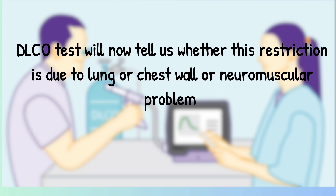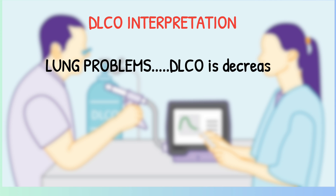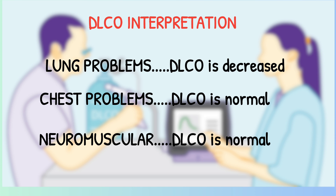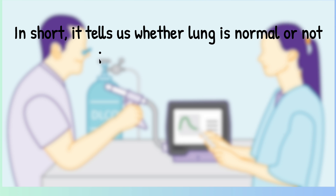The DLCO test tells us whether the restriction on spirometry is due to a lung problem, a chest wall problem, or a neuromuscular problem. In lung problems, DLCO is decreased because the integrity is lost. In chest wall problems, DLCO is normal. In neuromuscular problems, DLCO is also normal, because the lung integrity remains intact.